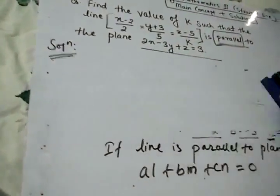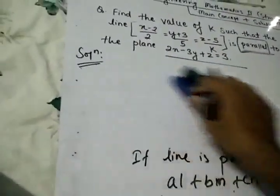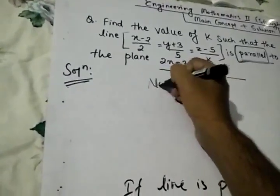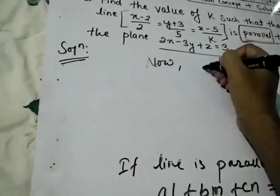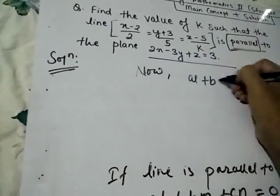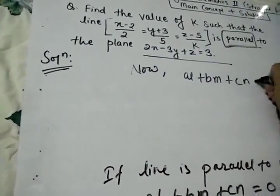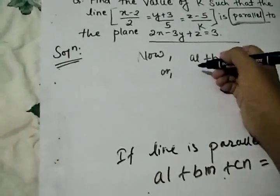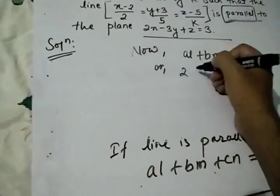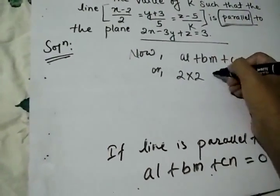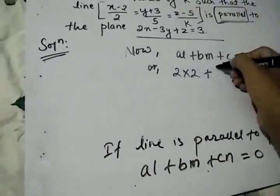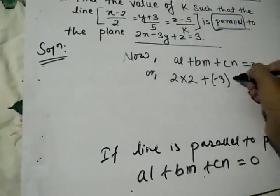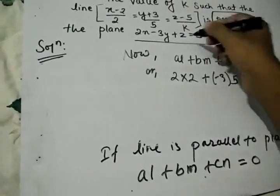Now AL + BM + CN = 0. We have A = 2, L = 2, B = -3, M = 5, C = 1, and N = K equals to 0.